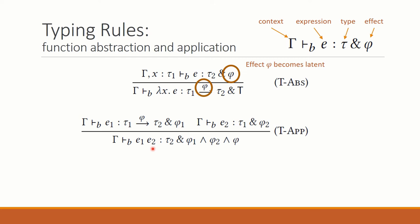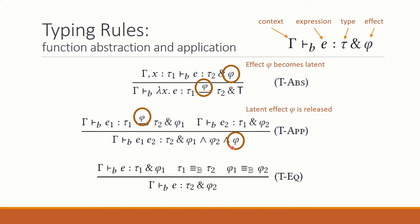So what happens to application? We try to apply an expression e1 to an expression e2. And then the effect of this expression is the combined effect of evaluating e1, which is phi 1, and evaluating e2, which is phi 2. And also the latent effect is released.